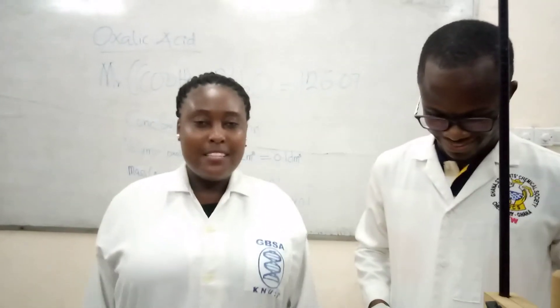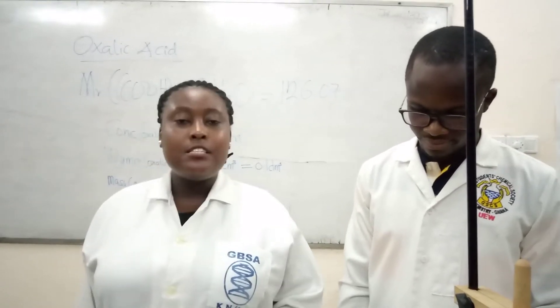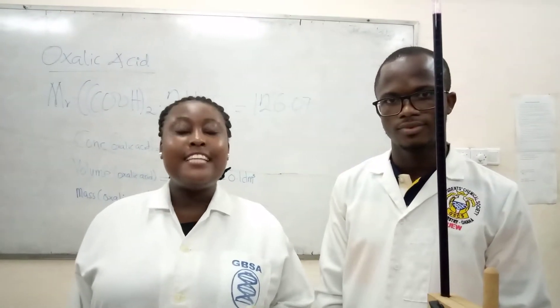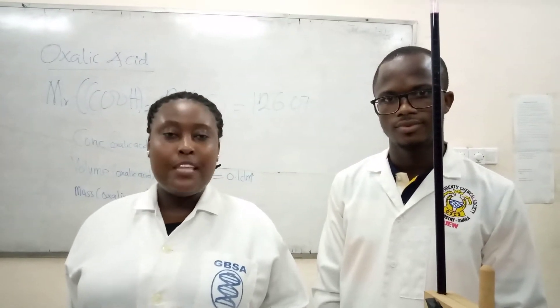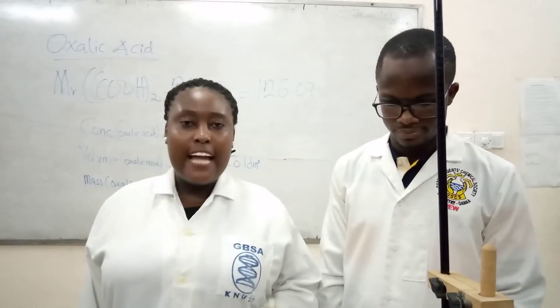Hi everybody, welcome to my channel. Today's activity is about redox titration. Redox titration involves two reacting species: one is an oxidizing agent and the other is a reducing agent. Today's practical, our oxidizing agent is potassium permanganate, and the reducing agent is oxalic acid.